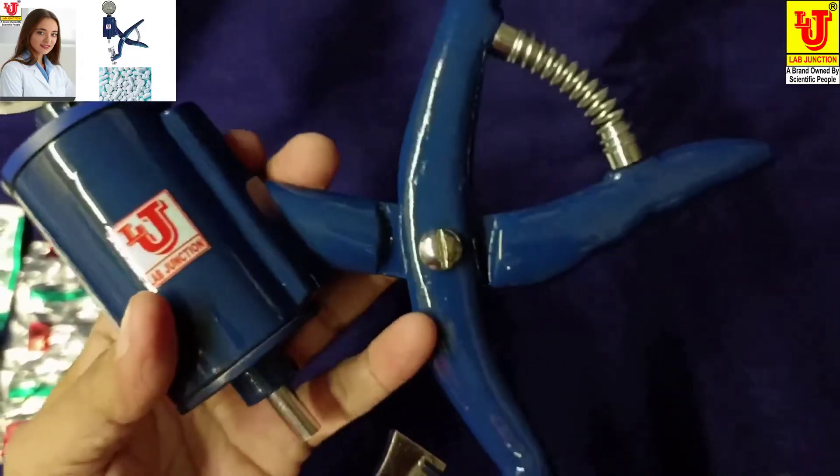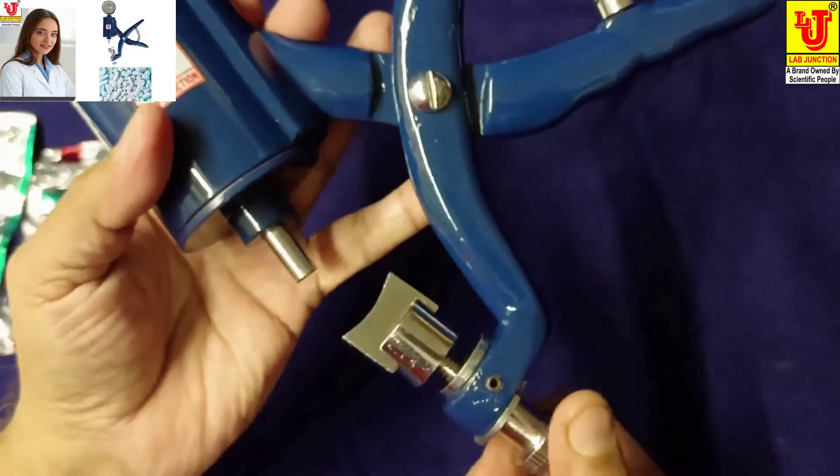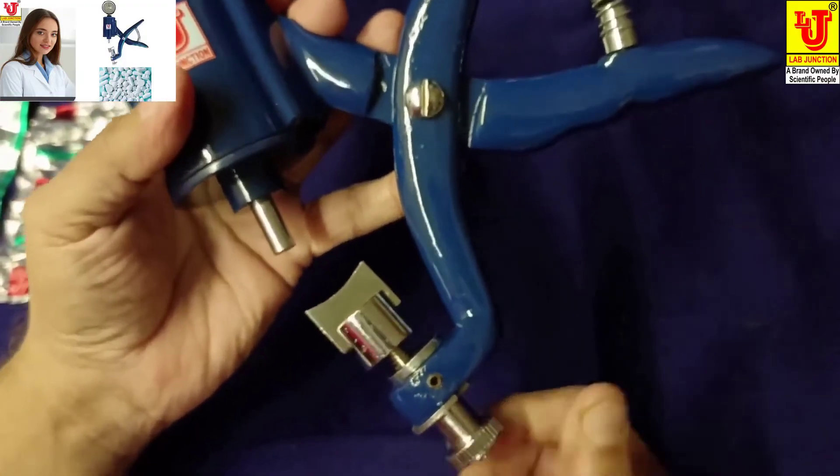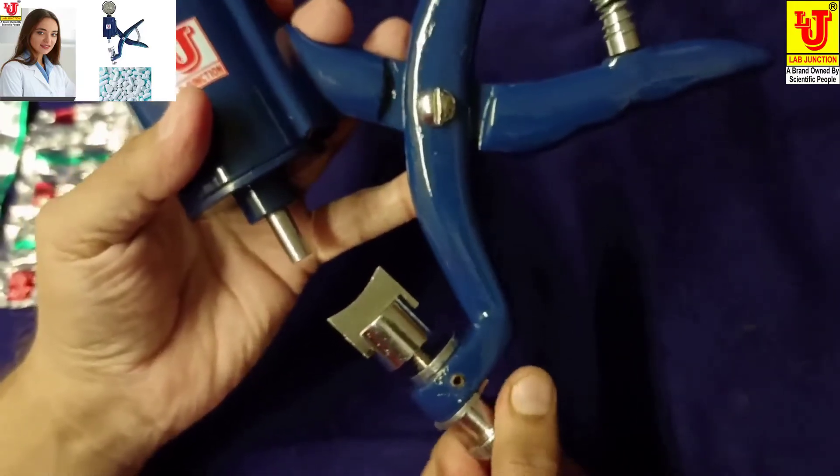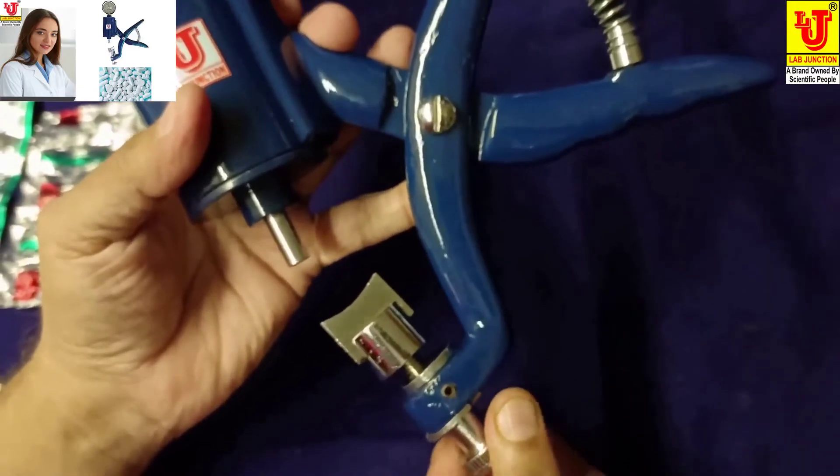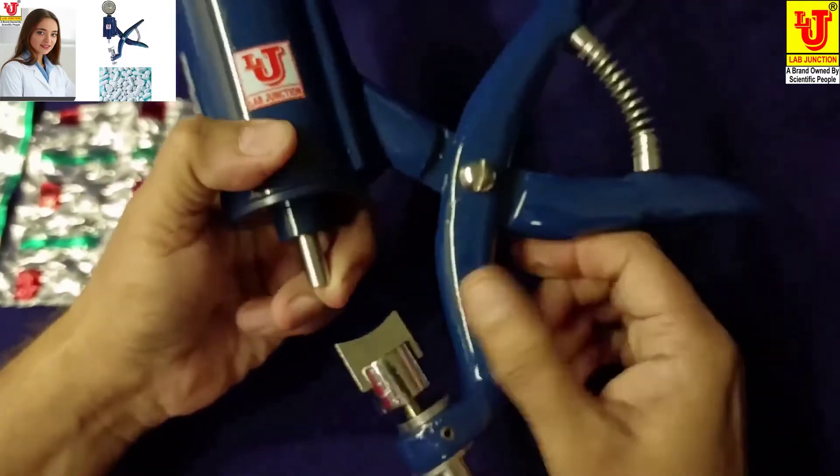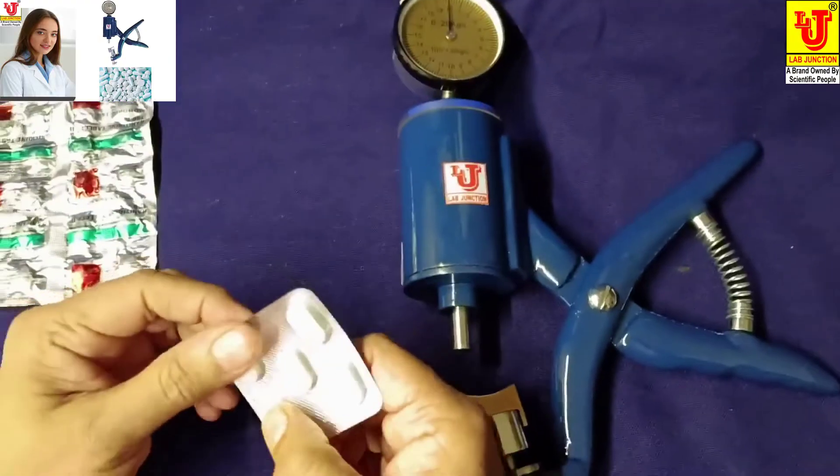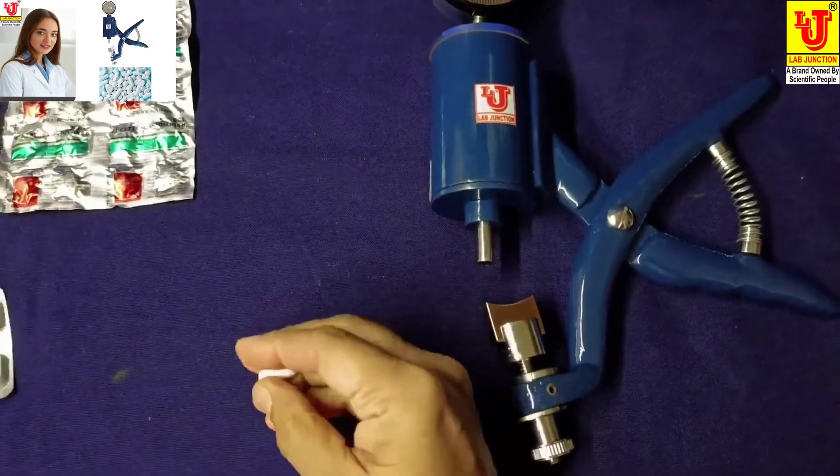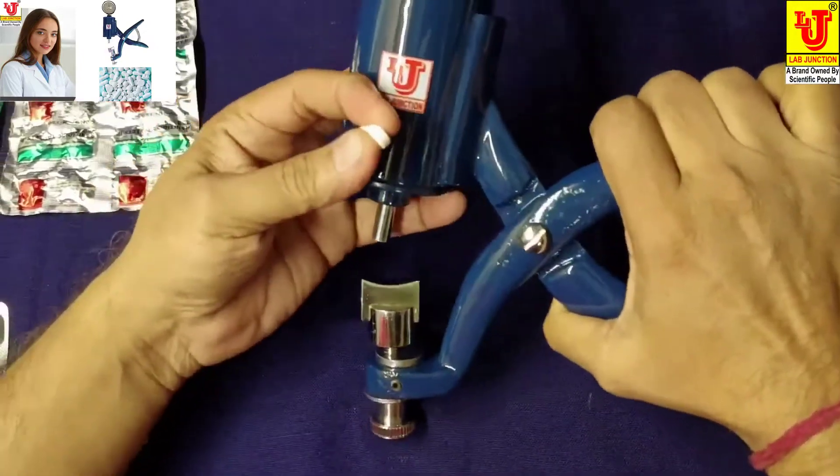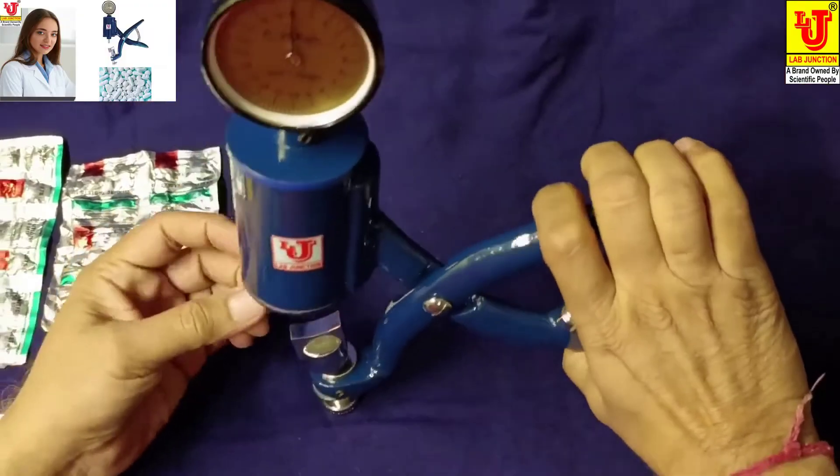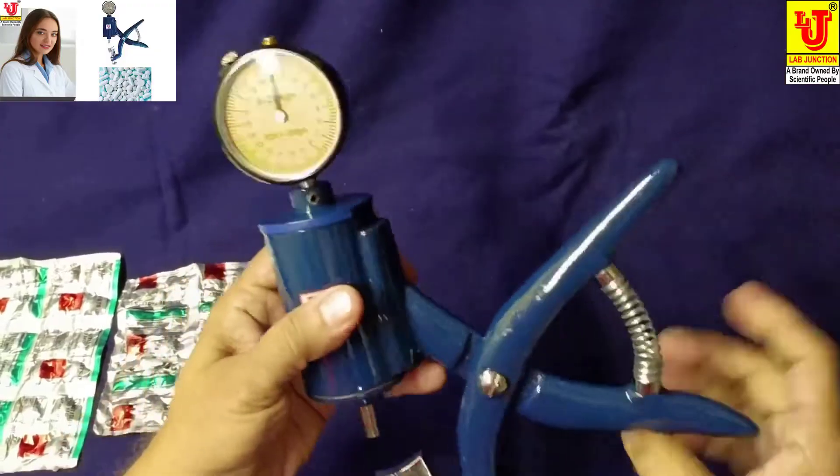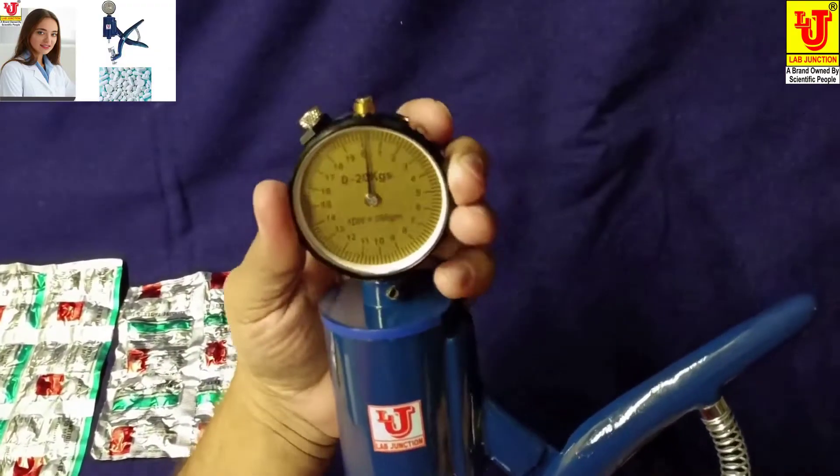This is adjustable for big tablets. If you want to use big tablets, rotate this to scroll down. Then you can adjust big tablets in this gap. I am taking this tablet and placing it here. First, you have to set zero like this.